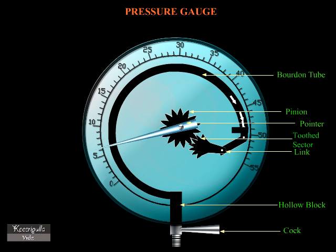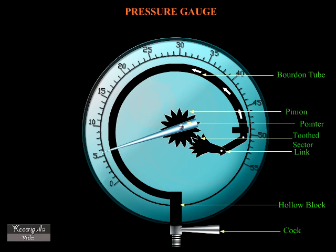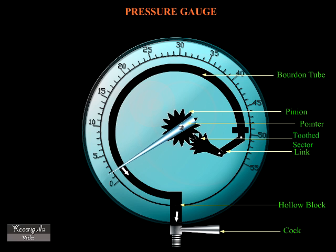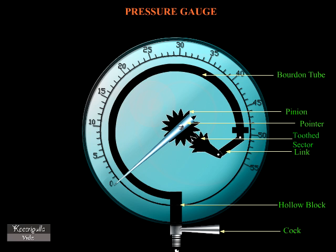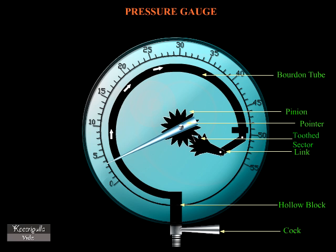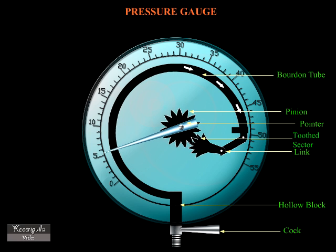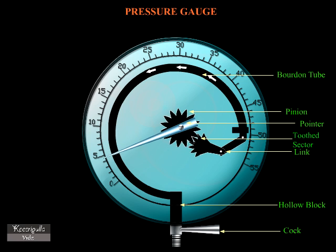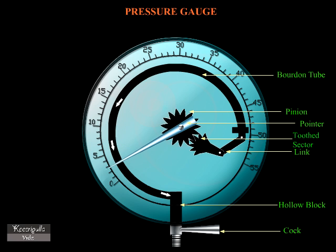When steam enters the elliptical tube, the tube section tries to become circular, which causes the other end of the tube to move outwards.